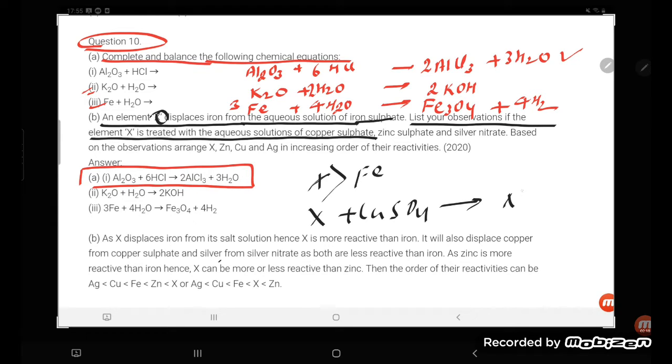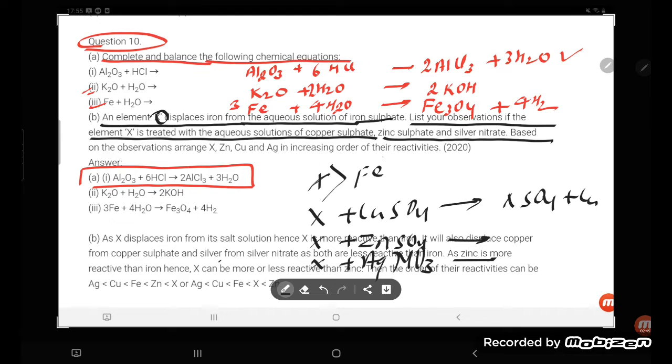So if you are treating X with the copper sulfate CuSO4, it will displace, it will form XSO4 plus Cu. Zinc sulfate and silver nitrate based on copper sulfate, and then X is going to be treated with ZnSO4 also, and then lastly it is silver nitrate, so X plus AgNO3.